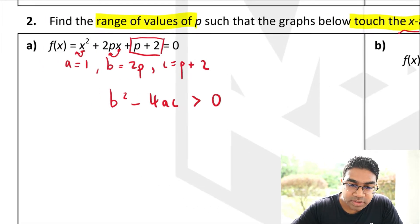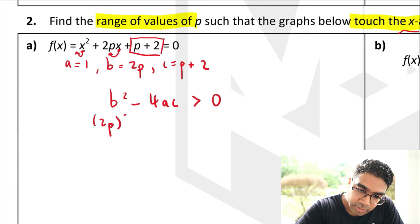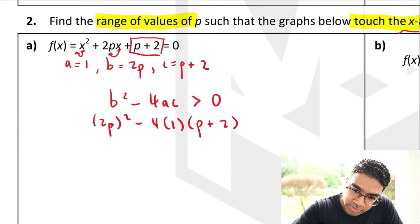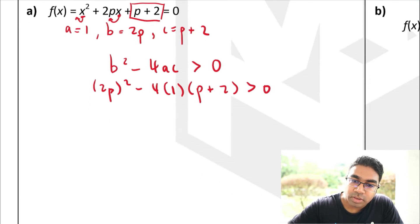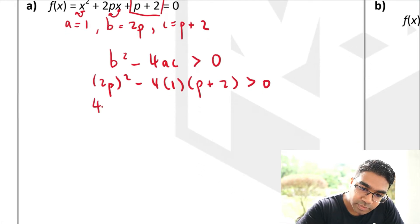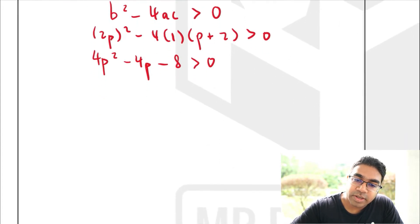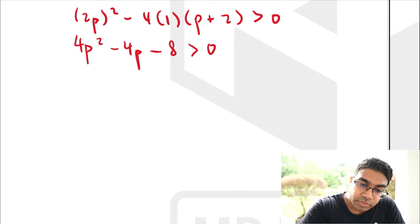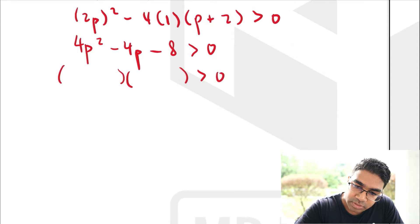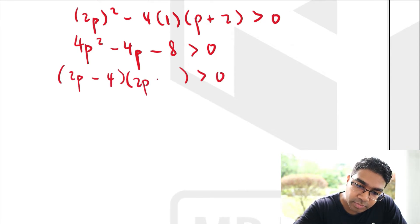Substituting the values: (2p)² − 4(1)(p + 2) > 0. This gives 4p² − 4p − 8 > 0. We have a quadratic inequality. In order to solve it, we need to find the roots, so we factorize: (2p − 4)(2p + 2) > 0.